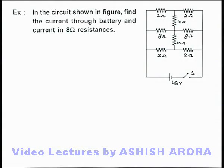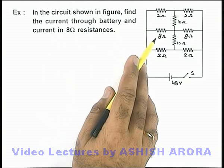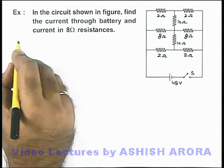In this example, we are given that in the circuit shown in figure, we are required to find the current through the battery and current in 8 ohm resistance. Now in this situation,